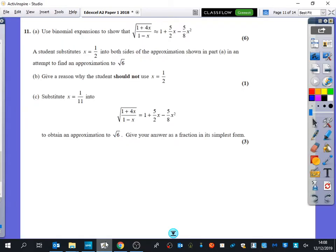Question 11 hasn't actually come up for my students yet but this is worth us having here so you can look at it another time. For 11a it says use the binomial expansion to show that the square root of 1 plus 4x over 1 minus x is approximately equal to 1 plus 5 over 2x minus 5 over 8x squared.